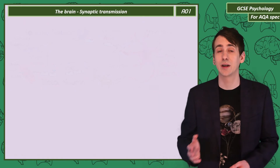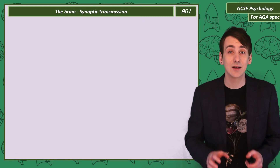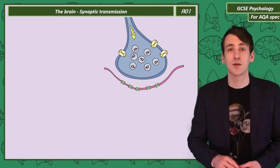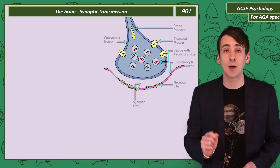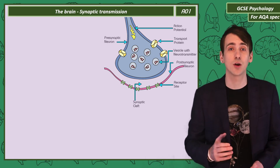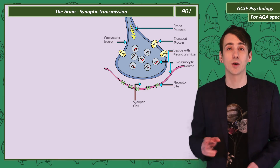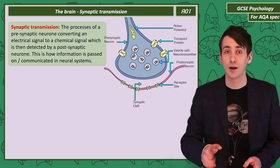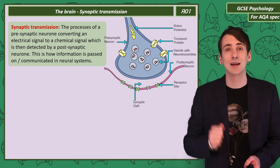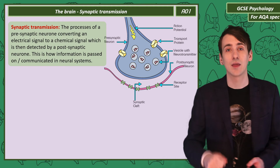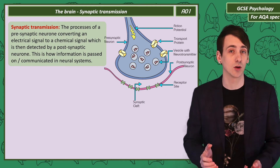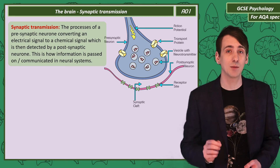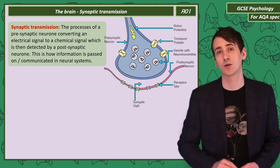So I've said that neurons communicate electrochemically — we need to understand that process. The important structure is the synapse. Synaptic transmission is simply how a presynaptic neuron, here in blue, converts an electrical signal into a chemical signal that is then detected by a postsynaptic neuron, here in pink. The chemical molecules released by neurons and detected at receptor sites are called neurotransmitters.